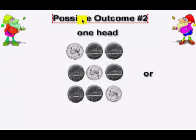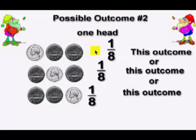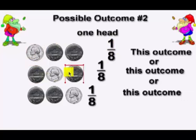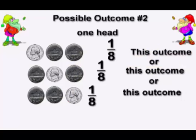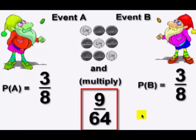Possible outcome number two is they can each get one head. They can get this outcome, or this one, or that one. There are three ways to get one head out of a total eight. Each individual arrangement is one out of eight, and when you hear the word 'or,' that means you add up those probabilities. So possible outcome number two is three out of eight. We want both guys to get it — P(A) and P(B) — so we multiply them. The probability for the second outcome is nine out of 64.